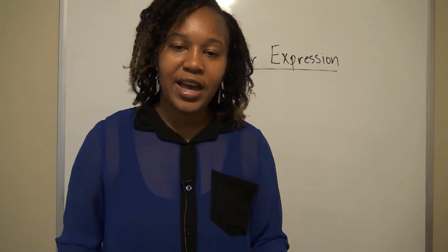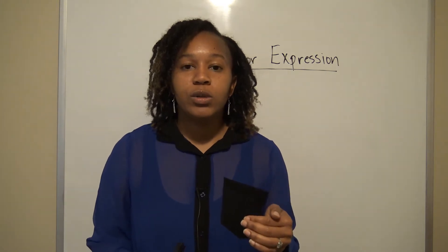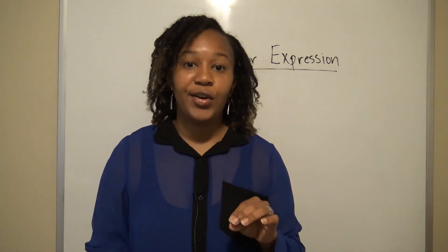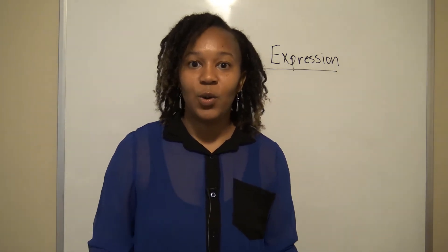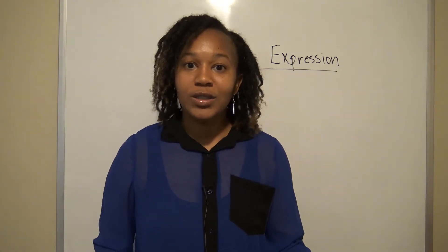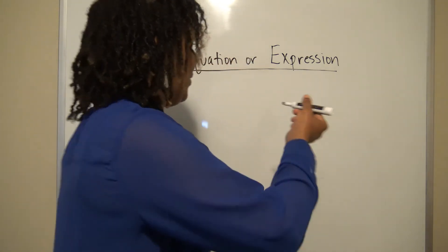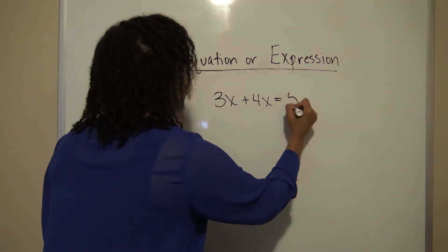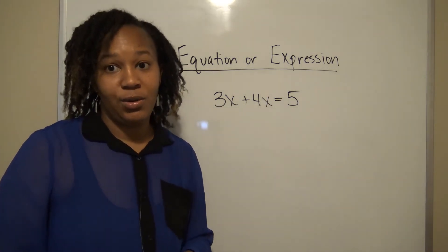You're most likely taking an algebra class and that's why you're viewing this video. We want to talk about what is an equation, because algebra is all about solving equations. There are different types of equations, but we just want to know basically what's an equation and what's an expression. The key: what makes something an equation is an equal sign. It also has to have a variable. For example, 3x + 4x = 5 — because there's a variable and an equal sign, this would be an equation.